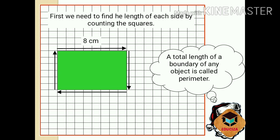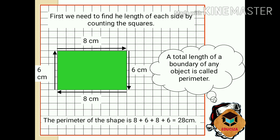First side is 8 centimeter, because the length of first side is 8 centimeter. Second side is 6 centimeter, then 8 centimeter, then 6 centimeter. So let us add all the sides. The perimeter of the shape is 8 plus 6 equals 14, 14 plus 8 equals 22, 22 plus 6 equals 28 centimeter.